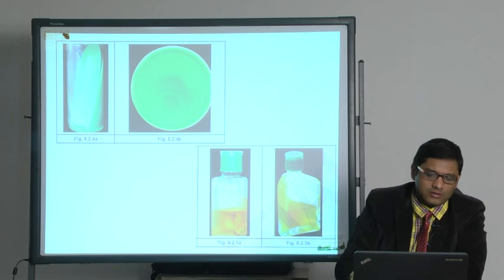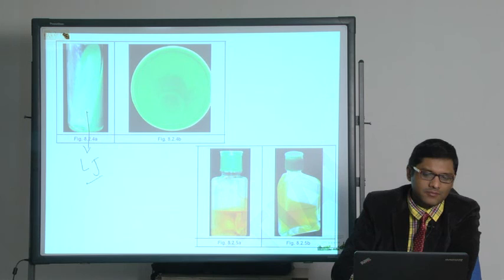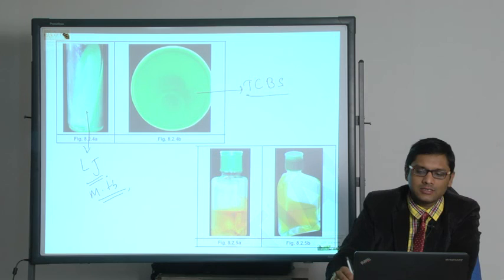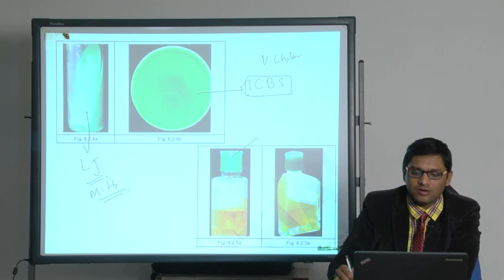These are other selective media. This is LJ medium, Lowenstein-Jensen medium, and this is TCBS agar. LJ medium is used for Mycobacterium tuberculosis. TCBS agar is used for Vibrio cholerae and these two are blood culture bottles.